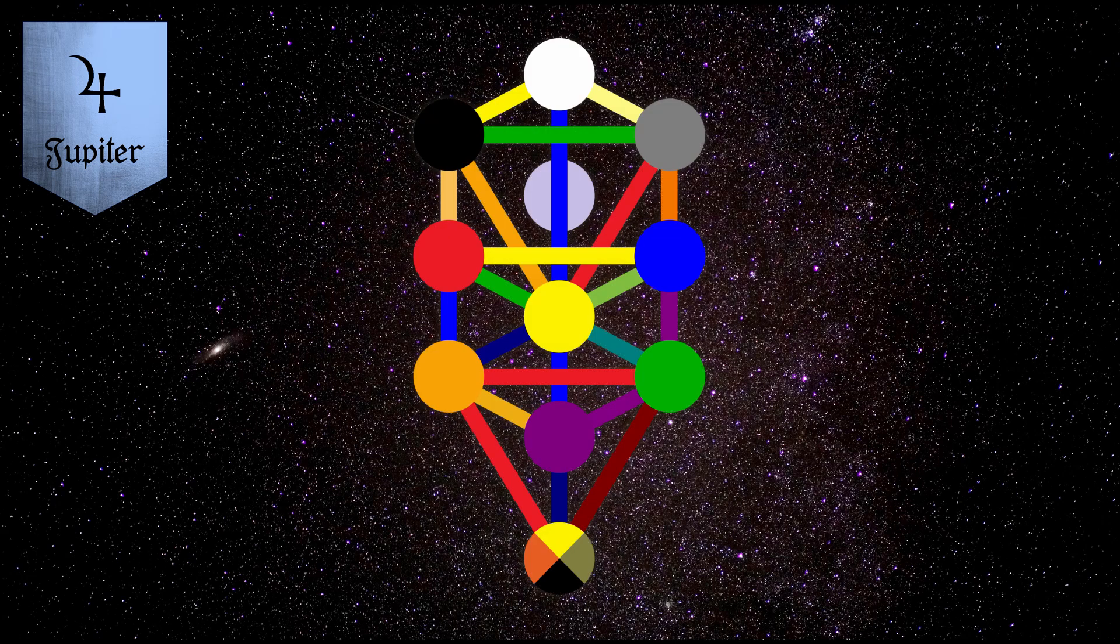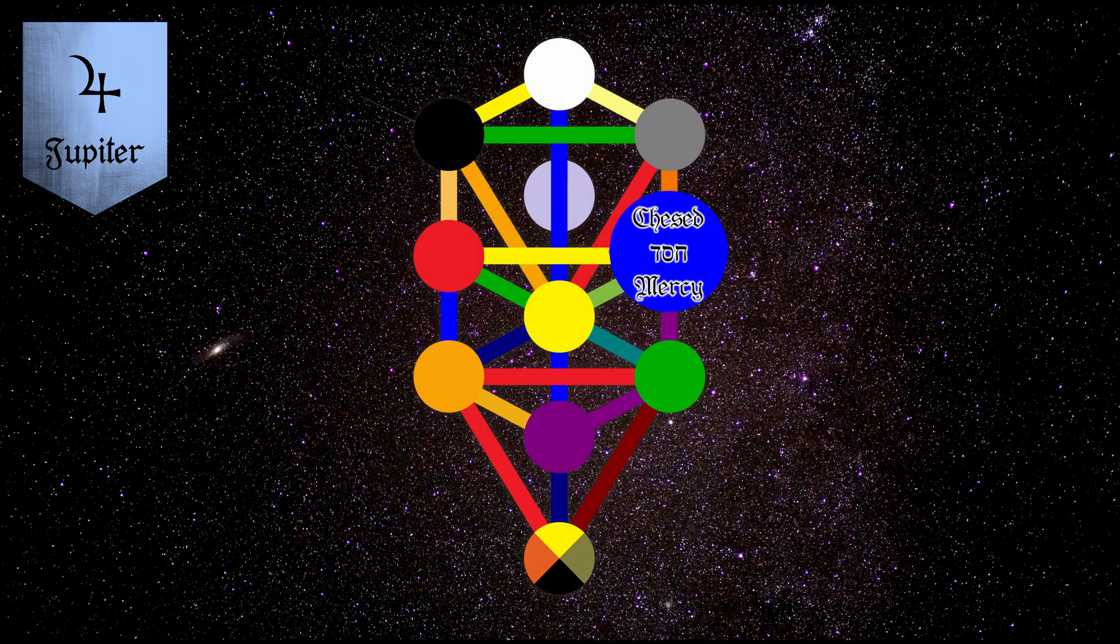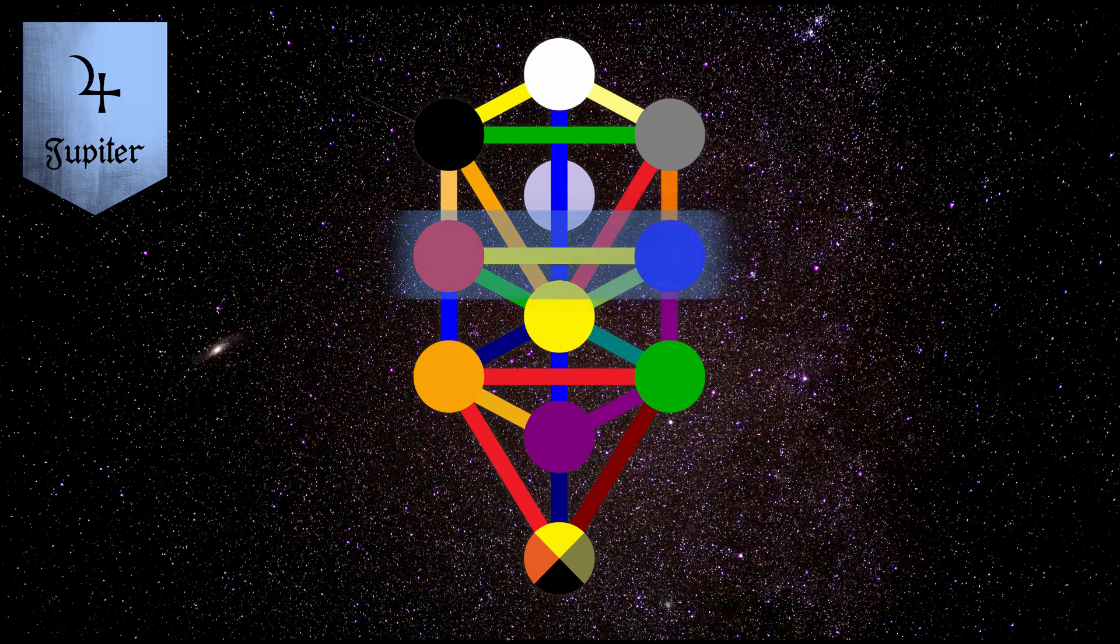The sephirah on the Kabbalistic Tree of Life which underlies the meaning of Jupiter is chesed, which means mercy or benevolence. The sephirah chesed corresponds to the form aspect of the higher mental plane on the macrocosmic Tree of Life.